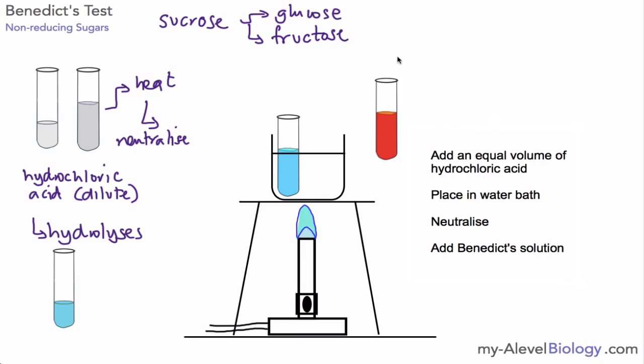So a quick outline of this extra step is to add an equal volume of hydrochloric acid, place in the water bath, we then neutralize, test with pH paper, add Benedict's solution, and then again back into the water bath to test to see if we get the color change.